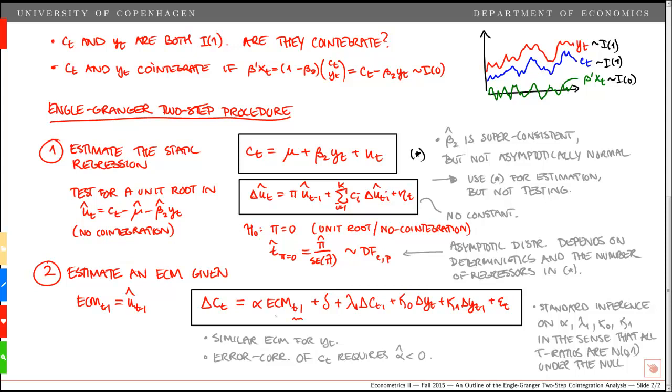To briefly summarize the Engel-Granger two-step procedure: first we estimate a static regression, ct on yt and a constant, we save the estimated residuals, and we test for a unit root. If we find cointegration, we go to the second step where we estimate an error correction model for ct, but we could also do that for yt, and there we have just included the estimated residual from the static regression as a regressor. That's all for now. Thanks for watching.